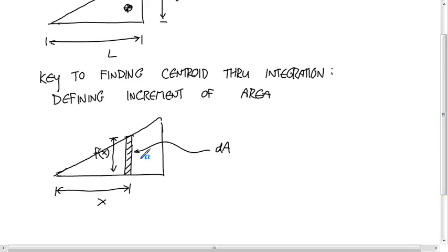So for this thing, the centroid of the increment is... f of x over 2 gives you the y centroid. What's going to be the x centroid? x, because this thing is infinitesimal.